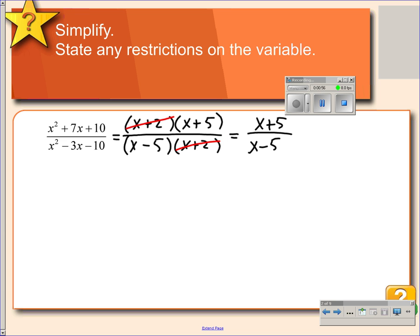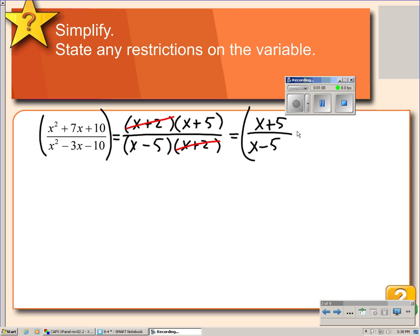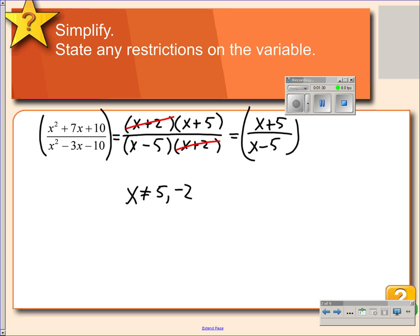We have simplified. Next we want to state the restrictions on the variable. This expression is equal to this expression whenever x is any real number except for anything that makes the denominator equal 0. So restrictions on the denominator are that x cannot equal 5 because that would make the denominator equal 0. And it also cannot equal negative 2. Even though we've canceled that factor, negative 2 in the denominator would be undefined.